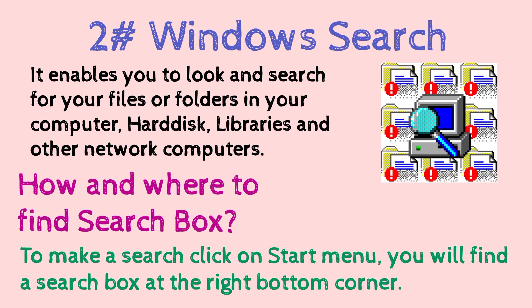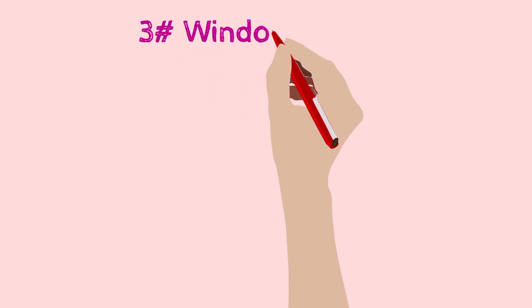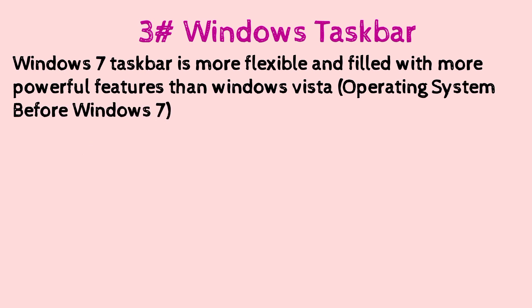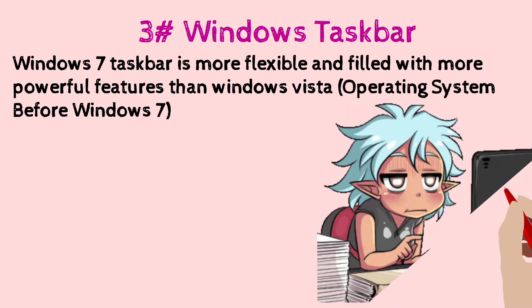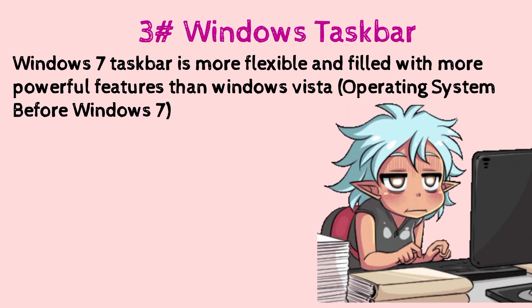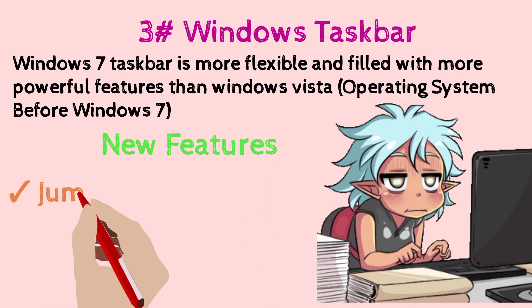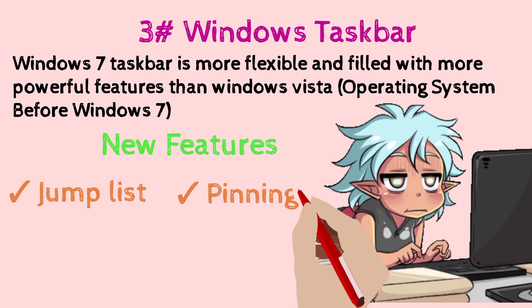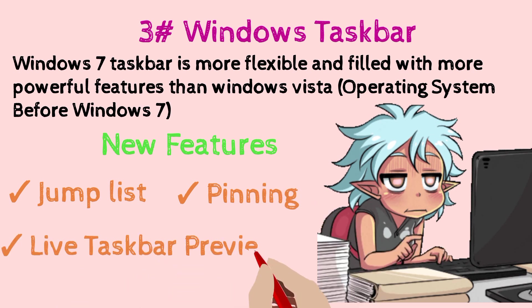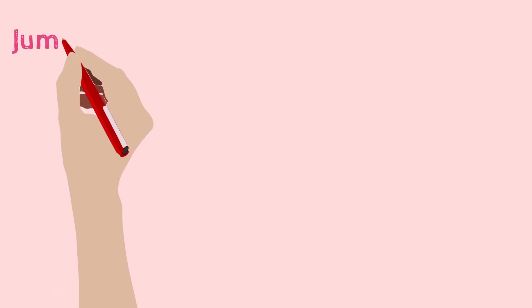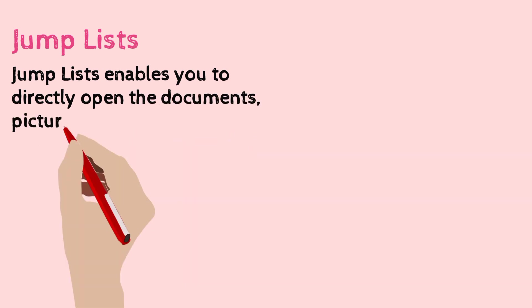The third feature is Windows Taskbar. Windows 7 taskbar is more flexible and filled with more powerful features than Windows Vista, which is the previous version of Windows. We get new features like jump list, pinning, and live taskbar preview. Jump list enables you to directly open documents, pictures, songs, and websites that you use often.